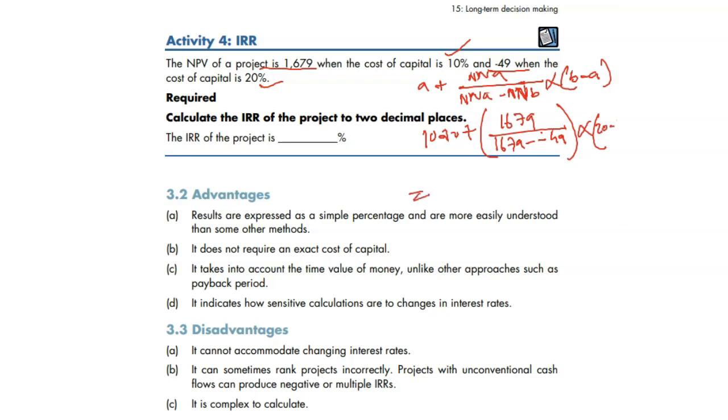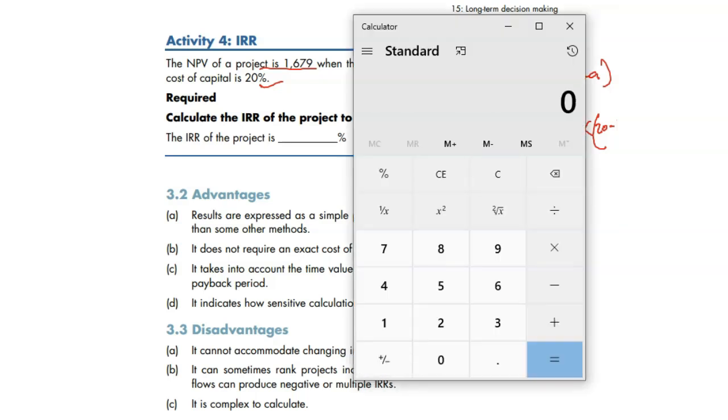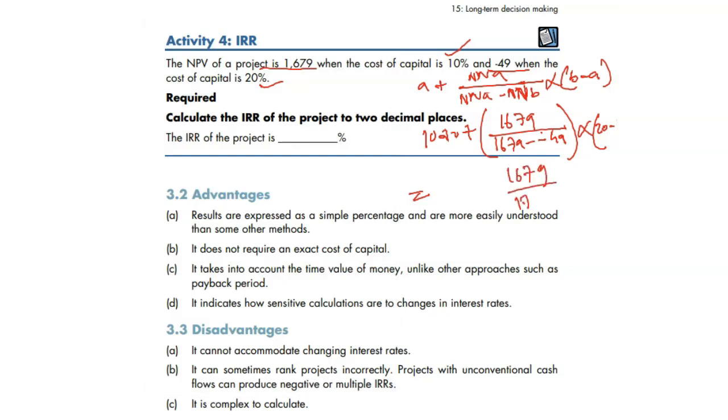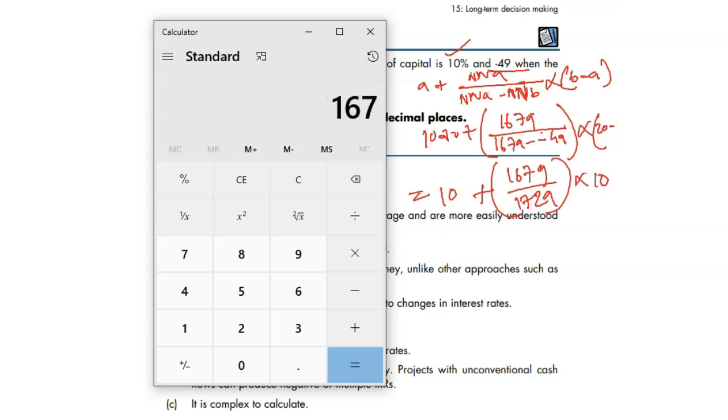Let's do it on the calculator. We're doing it on calculator. 16.79 plus 4.49. What do you get is 17.28. Into plus 10 and times by 10. 20 minus 10 is 10. Take the calculator on screen. 16.79 divided by 17.28 times by 10 plus 10. You get 19.71.